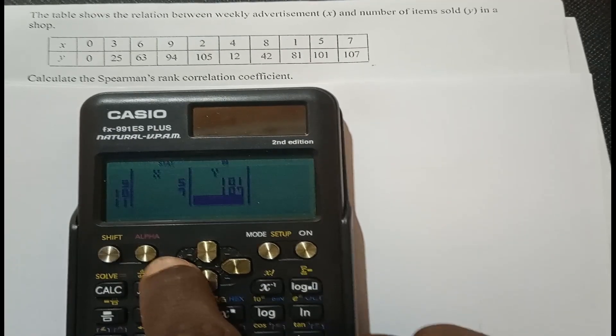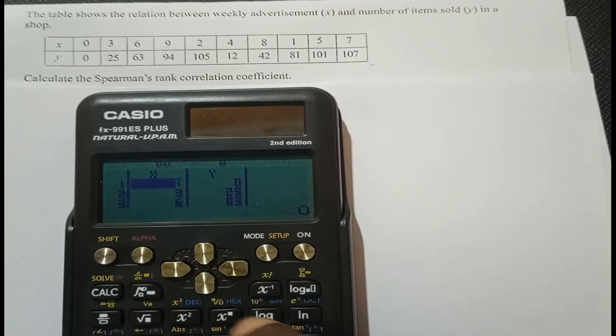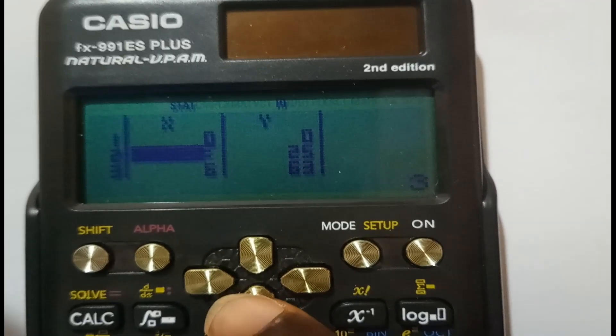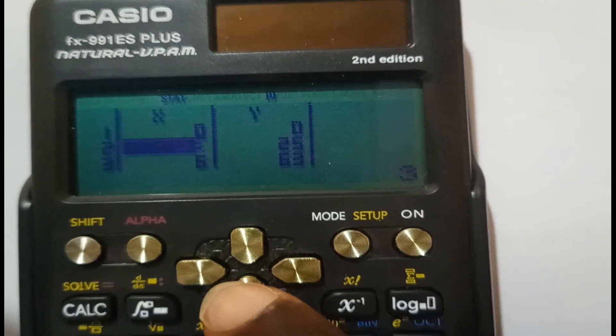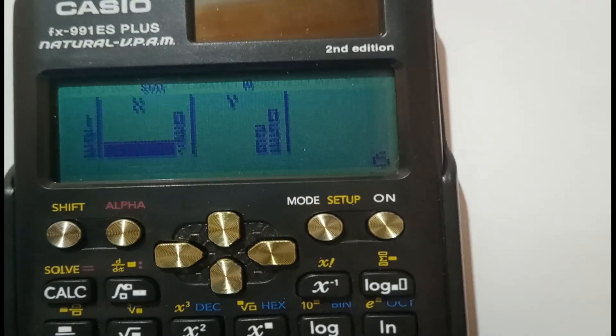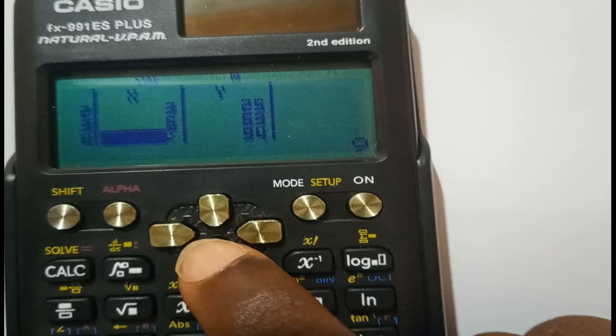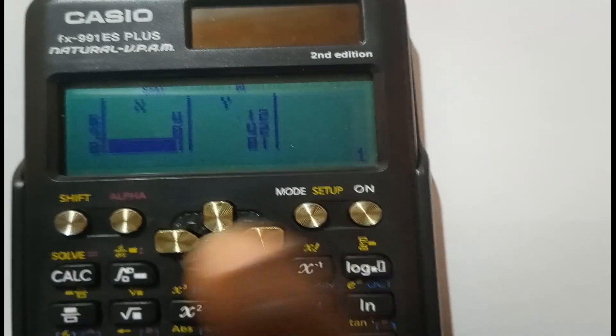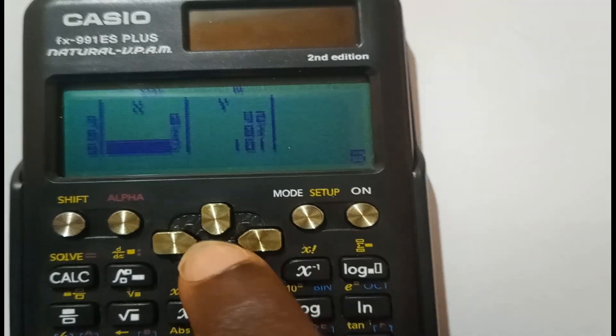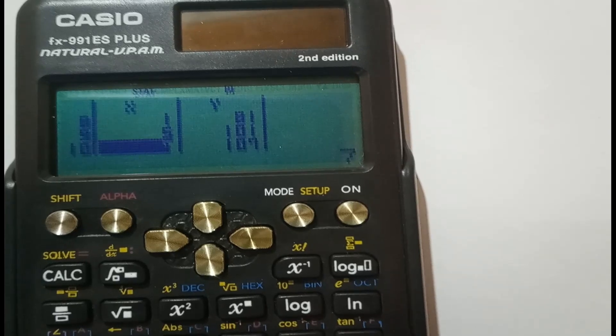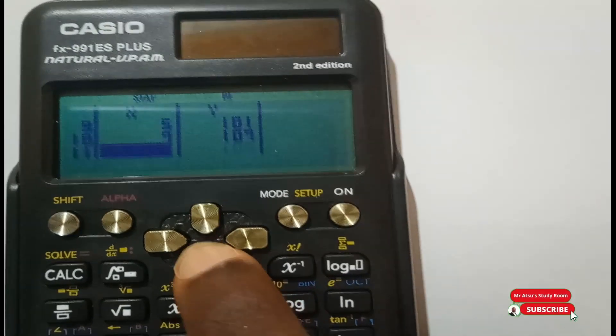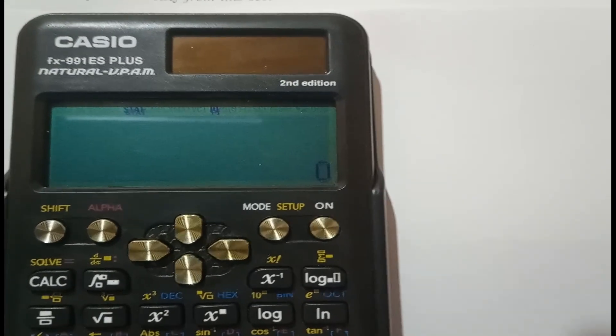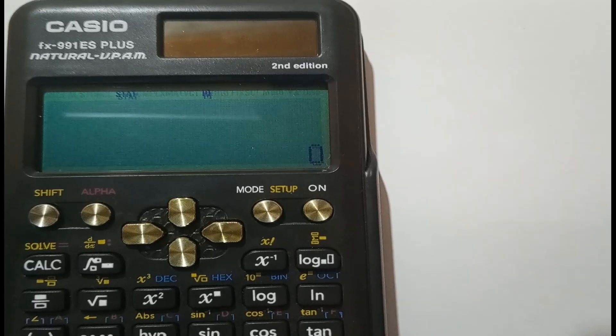I want to check along the x column, so I'll use the arrow key to bring it left, then press down to start from the top. Zero corresponds to zero, three to 25, six to 63, nine to 94, two to 105, four to 12, eight to 42, one to 81, five to 101, and seven to 107. All my figures are correct. I press down then AC. I've entered the data into the calculator.